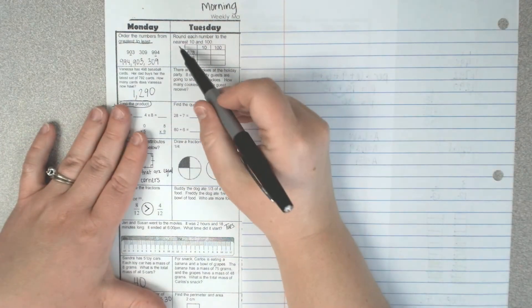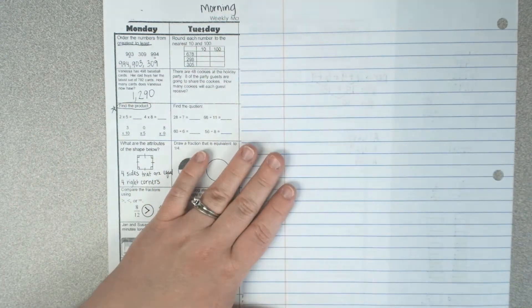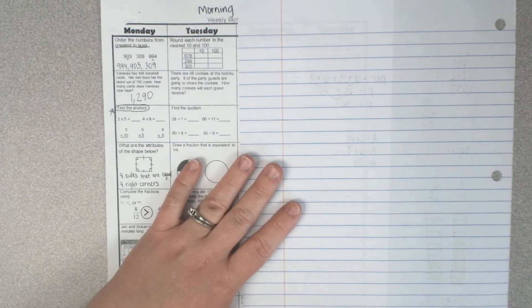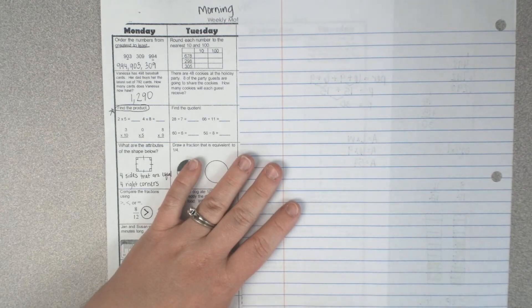For the first one it says round each number to the nearest ten and hundred. Remember when you're rounding to the nearest ten and hundred, four and below you round down, five and above you round up.